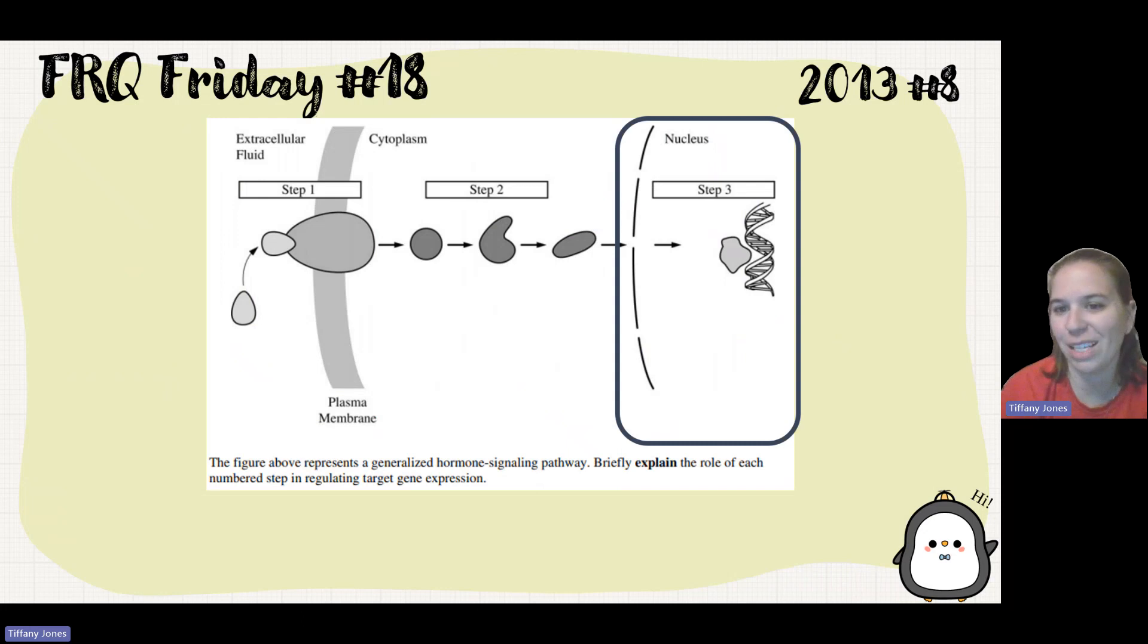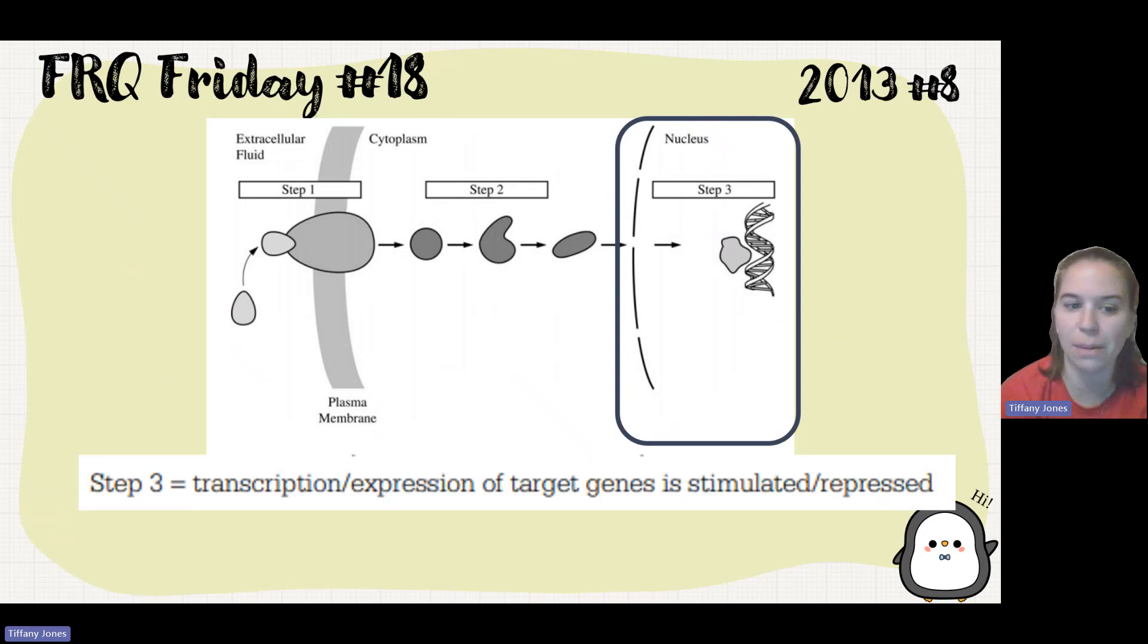And step three, let's look at the nucleus. I see that the signal is going to cause the DNA to become activated. So this can cause regulation of gene expression. It can turn on or turn off a gene. So transcription expression of target genes is stimulated or repressed.